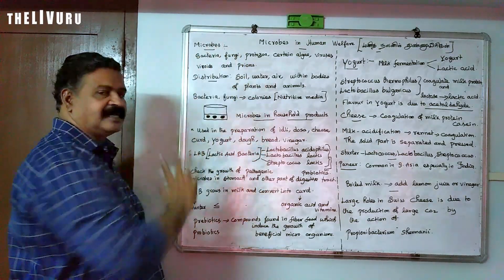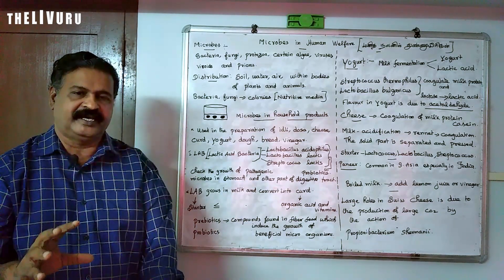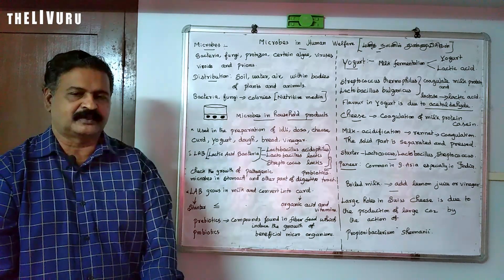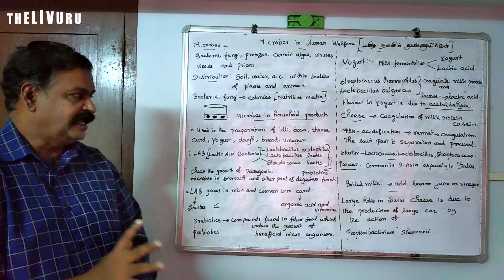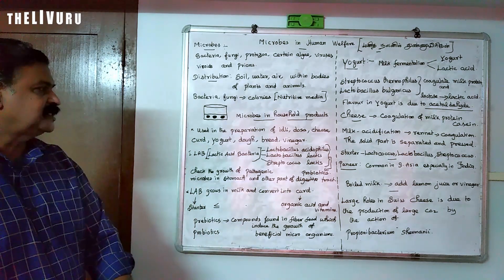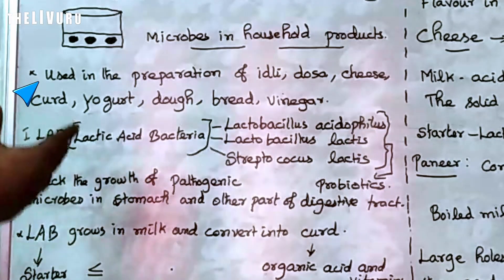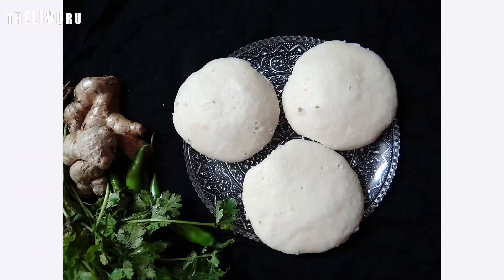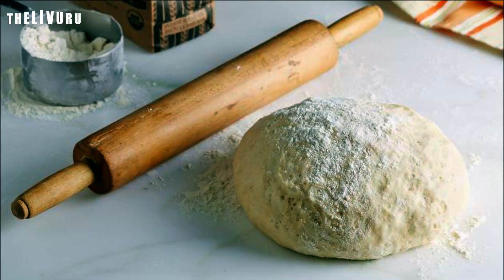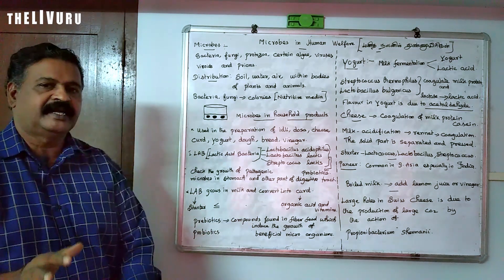Now let's look at the introduction — next one is microbes in household products. The names of the microbes are very important with the correct spelling. Examples of household products made using microbes include cheese, curd, and yogurt.